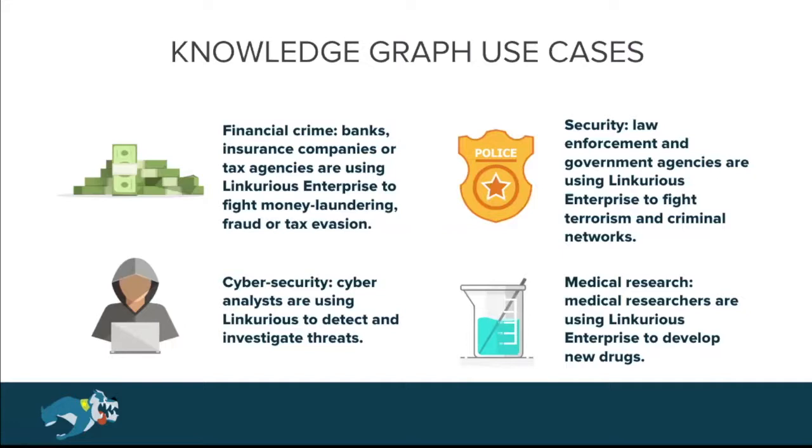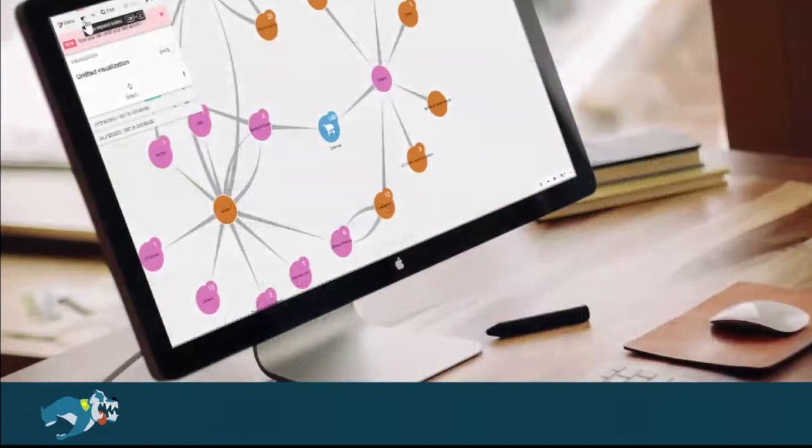We're also seeing government agencies leverage knowledge graphs for security. With Linkurious Enterprise, these clients understand networks of suspicious individuals by bringing together phone calls, emails, and other sources to identify potential accomplices and fight criminal rings. In cybersecurity, clients look at connections between routers, switches, applications, and IPs. For example, the red team of one of the largest cloud providers uses Linkurious Enterprise to analyze potential paths an attacker could use to access high-value assets. In medical research, drug companies use the knowledge graph approach to extract structural information from research papers. One client looks at relationships between symptoms, articles, researchers, and drugs, and has been able to identify smart ways to repurpose drugs for new diseases.